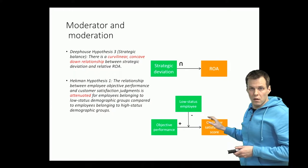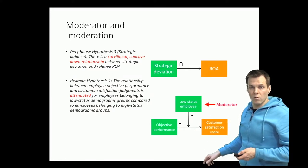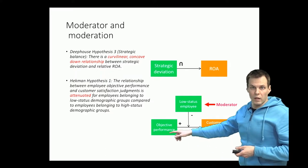For example, minorities are rewarded less for their good performance than whites in this particular scenario. So that's the traditional case of a moderation effect. You have a third variable called the moderator which influences the relationship between these two variables.